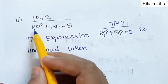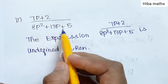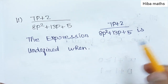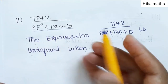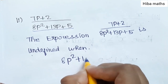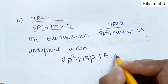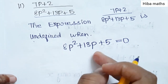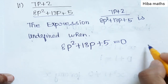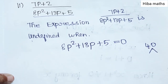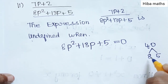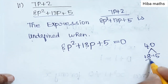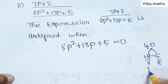The expression is undefined when the denominator 8p² + 13p + 5 is equal to 0. Now let's solve this equation by factorization. The product is 8 × 5 = 40, and 8 + 5 = 13. If we multiply by 8 and divide by 8, we get factors 1 and 5/8.